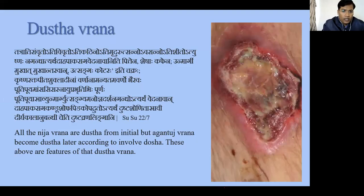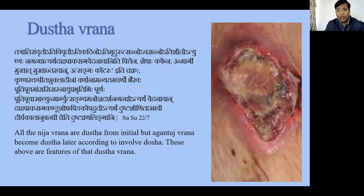That deformity causes chronicity in the wound. Then Atishto, Nagandhya, Daha, Paak, Raag, Vedana — due to exaggerated Pitta there must be Daha (burning), Paak (suppuration), Raag (redness), and Vedana (pain). Other features relate to Kapha.